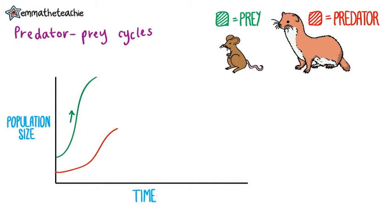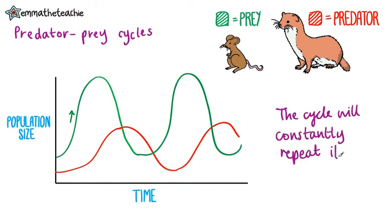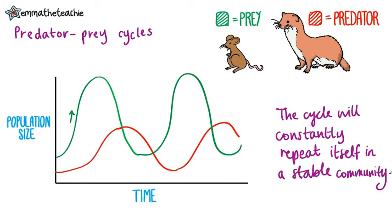Of course, now there are more predators to eat the prey, so the prey numbers will start to drop again, back to roughly where they started. But as the prey numbers drop, so will the predators, as there are too many to get enough food, so some won't survive to adulthood to reproduce. This cycle will continue — with fewer predators, meaning the prey population can start to increase again, and so on. The cycle will constantly repeat itself if it's in a stable community.